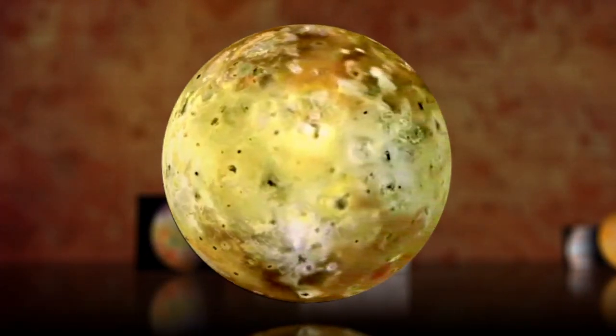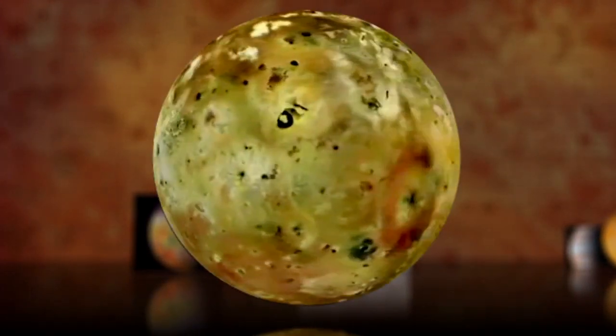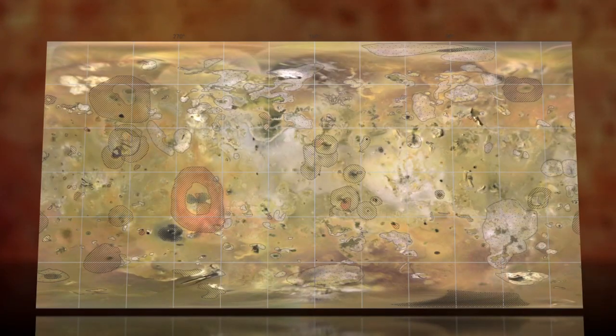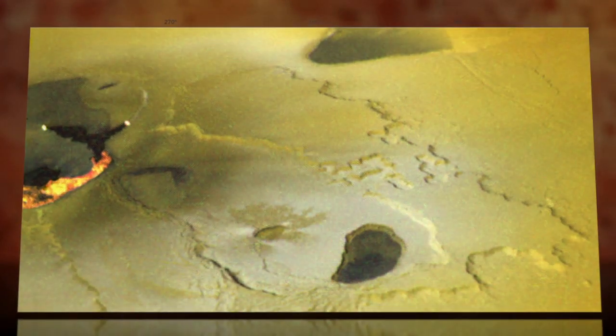One reason for the offset could be a faster than expected rotation for Io. There could also be a structure below the surface of the moon that allows magma to travel long distances from where it's heated to where it erupts.